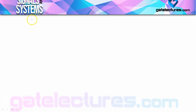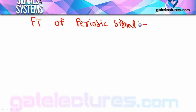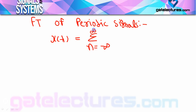आज की video का last concept है Fourier transform of periodic signals। अभी तक Fourier transform generally non-periodic signals के लिए calculate किये हैं। Periodic signals के लिए Fourier transform calculate करने के लिए, पहले Fourier series निकालेंगे। Fourier series representation: x(t) = Σ (n=-∞ to ∞) cₙ · e^(j·n·2πf₀t)।